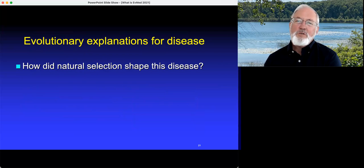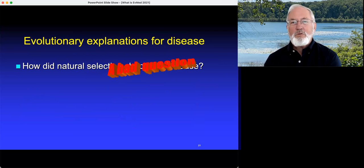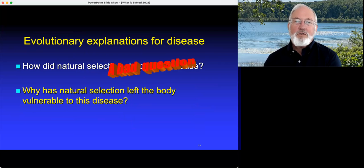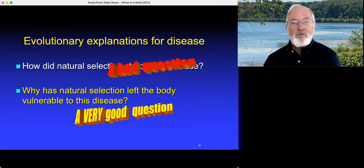How did natural selection shape this disease? That's the question that beginners ask. It must be useful somehow. But it turns out this is really the beginner's mistake and the most serious common mistake among beginners. It's a bad question. Diseases do not have evolutionary explanations. They're not products of natural selection. The right question is why has natural selection left the body, a particular trait in particular, vulnerable to disease? That's a very good question.